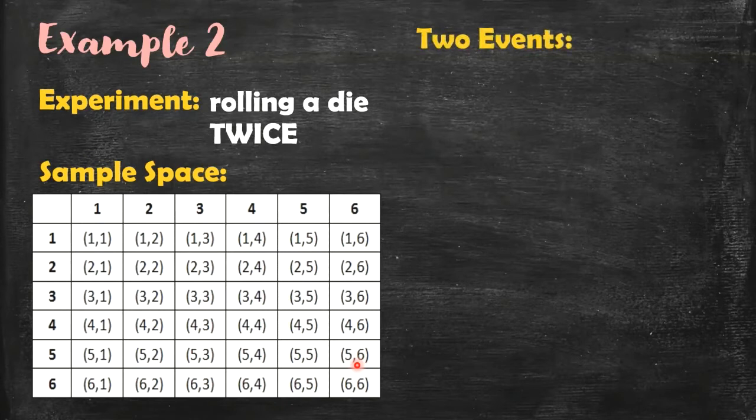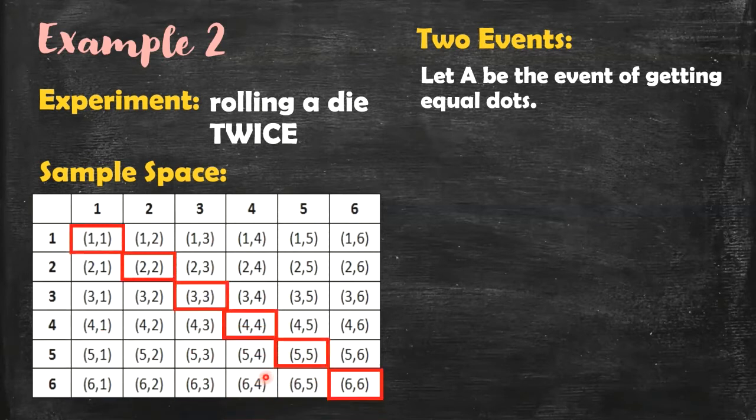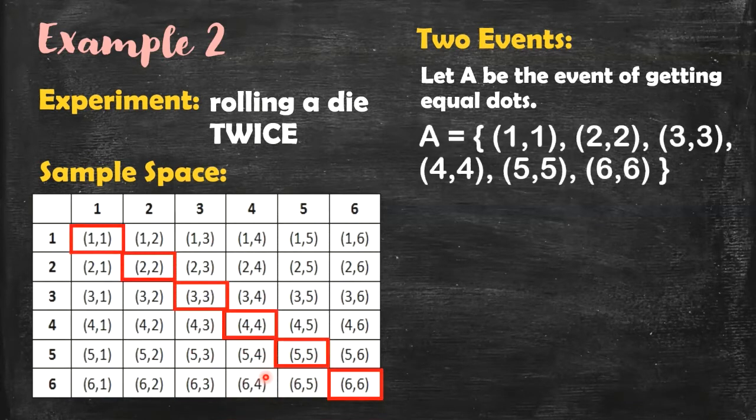Now let's consider these two events. The first event is the event of getting equal dots. So if you check our sample space, these are them. So event A contains the following elements.